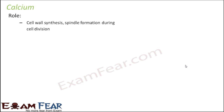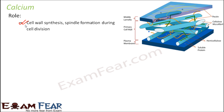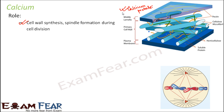The next element is calcium. It helps in cell wall synthesis and spindle formation during cell division. Regarding cell wall synthesis, remember the composition of the cell wall: the middle lamella separates adjacent cells, and below that is the primary cell wall. This middle lamella is made up of calcium pectate, showing that calcium plays an important role in the composition of the cell wall.